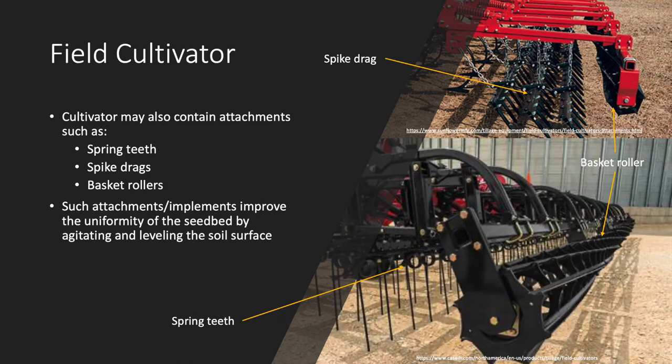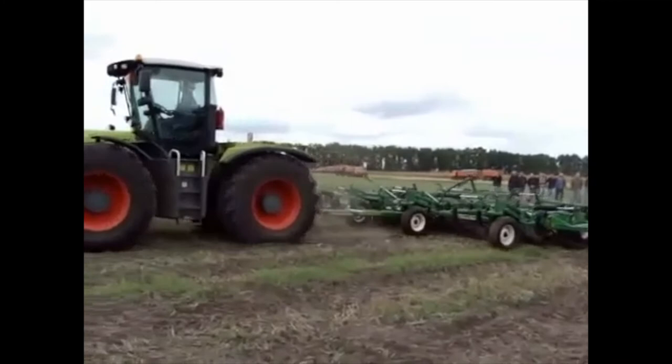Field cultivators may also be equipped with other implements such as spring teeth, spike drags, and basket rollers, all of which improve the uniformity of the seedbed by agitating and leveling the soil surface. Here's a short clip of a field cultivator in use.